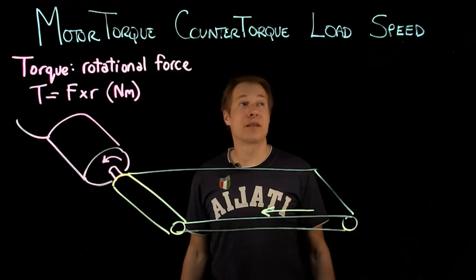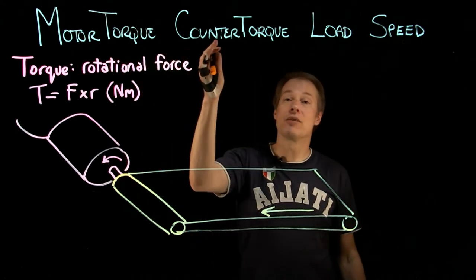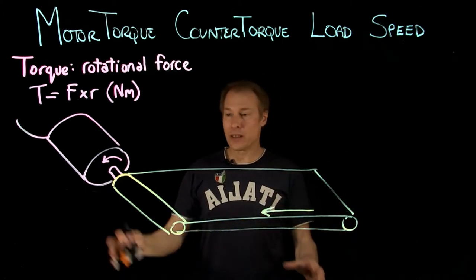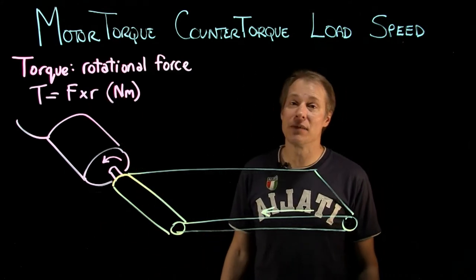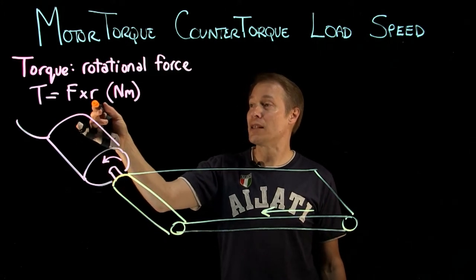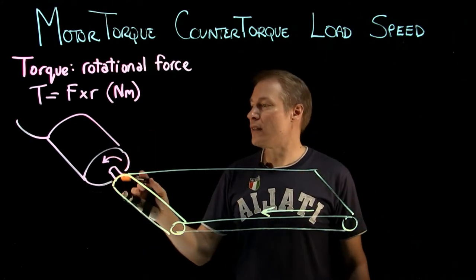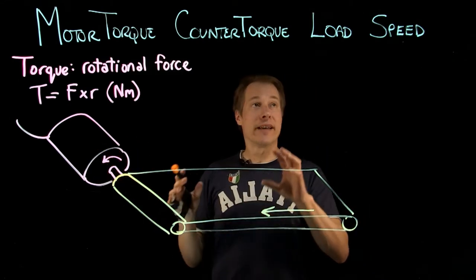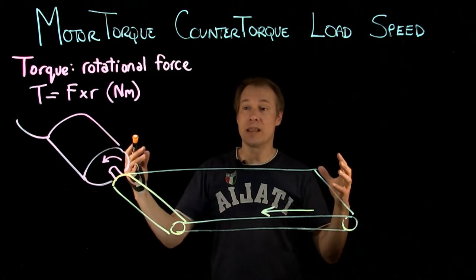Today we're going to talk about four concepts — motor torque, counter torque, load, and speed — and how they relate to each other within a motor circuit. We start with a definition of torque, which is a rotational force. The formula is torque equals force times radius, and the unit is Newton meters. I have a simple drawing of a motor with a conveyor belt attached, which will help represent load and show how all these things relate.